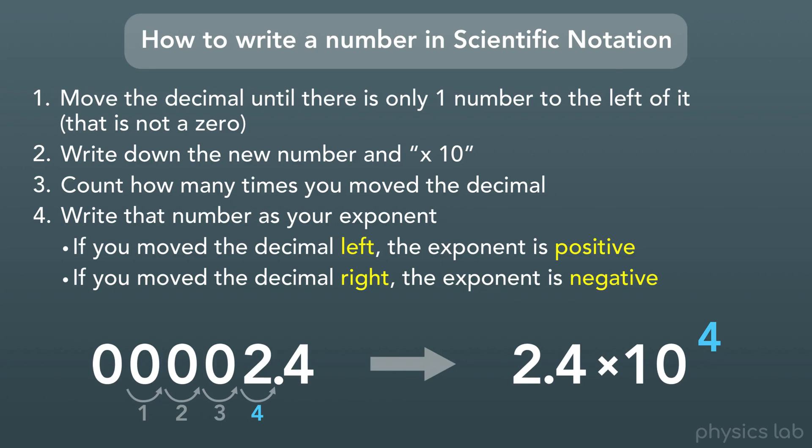But this time, we move the decimal to the right, so our exponent is negative. So there we go. 0.00024, written in scientific notation, is 2.4 times 10 to the negative fourth.